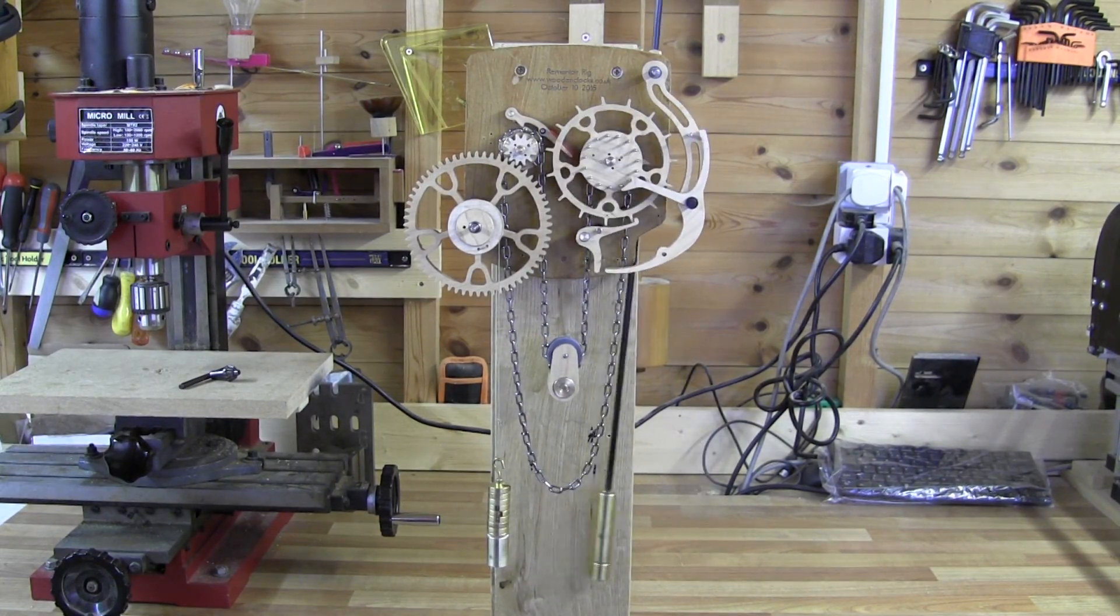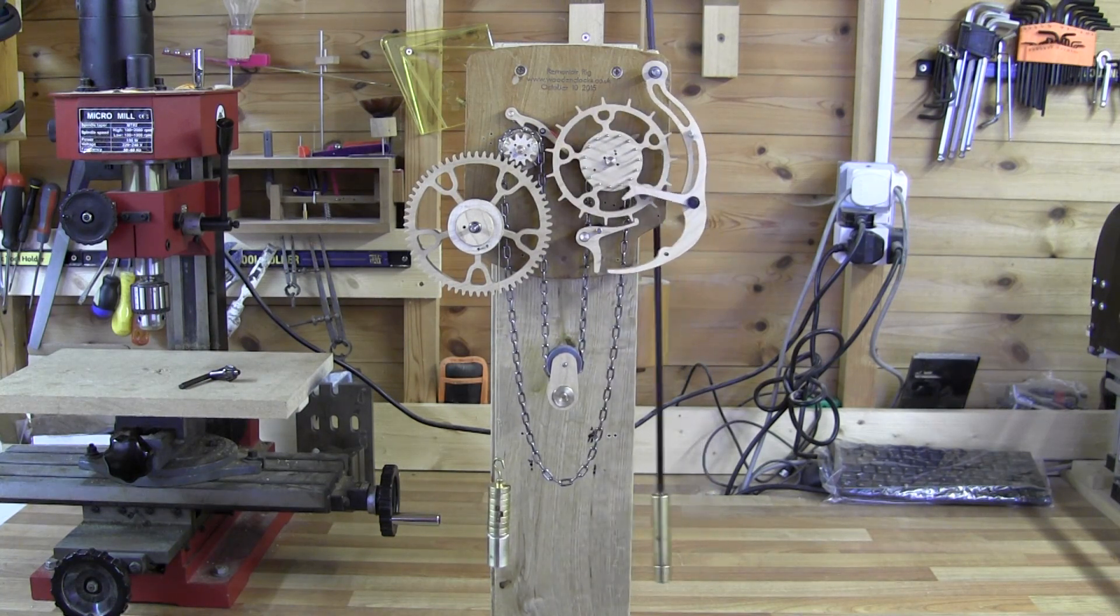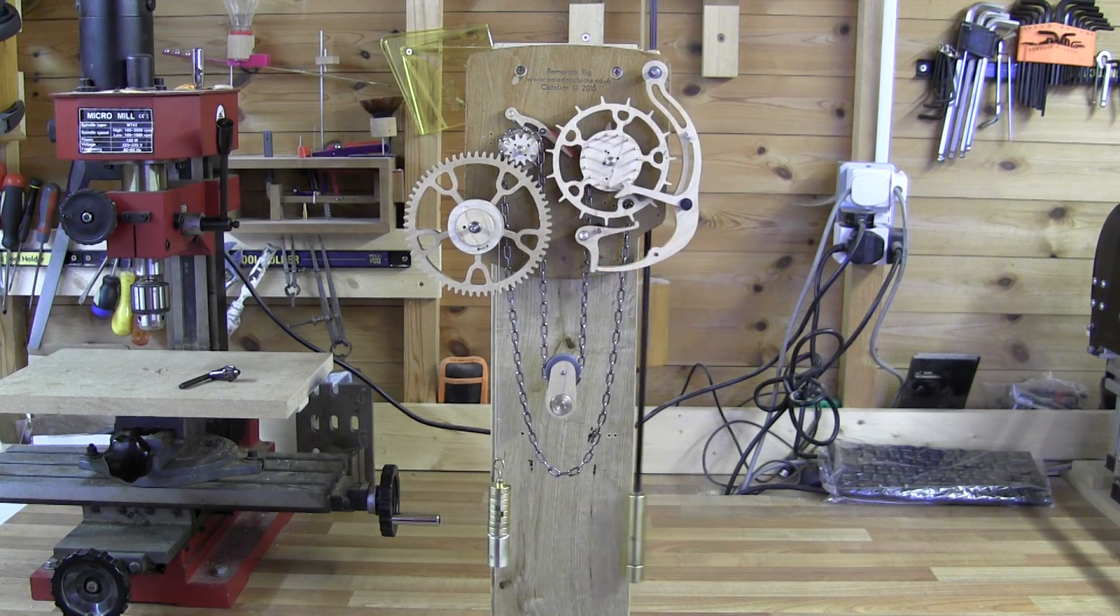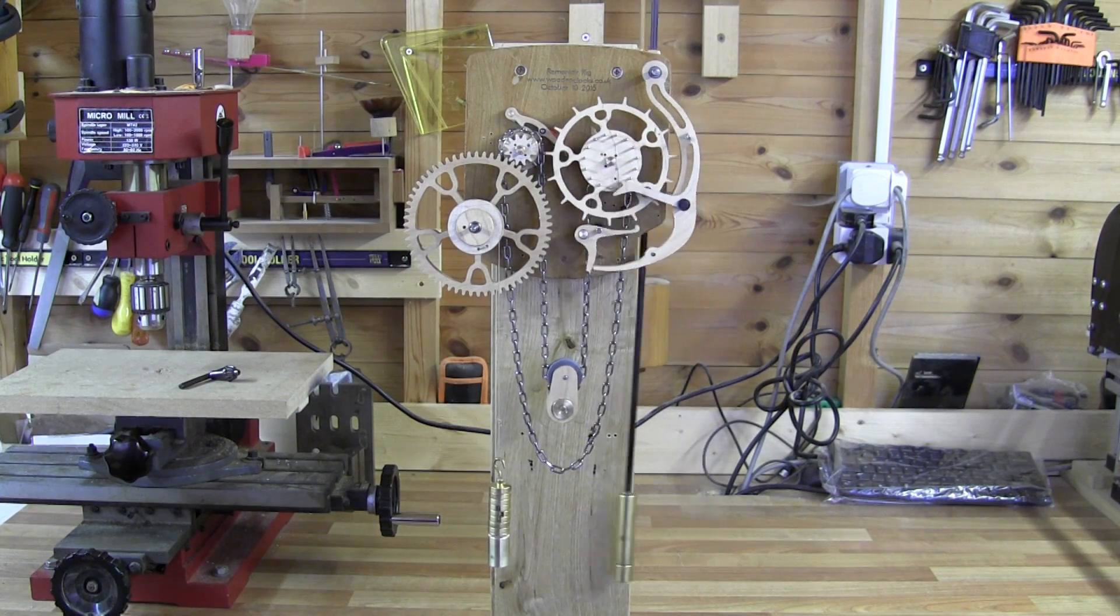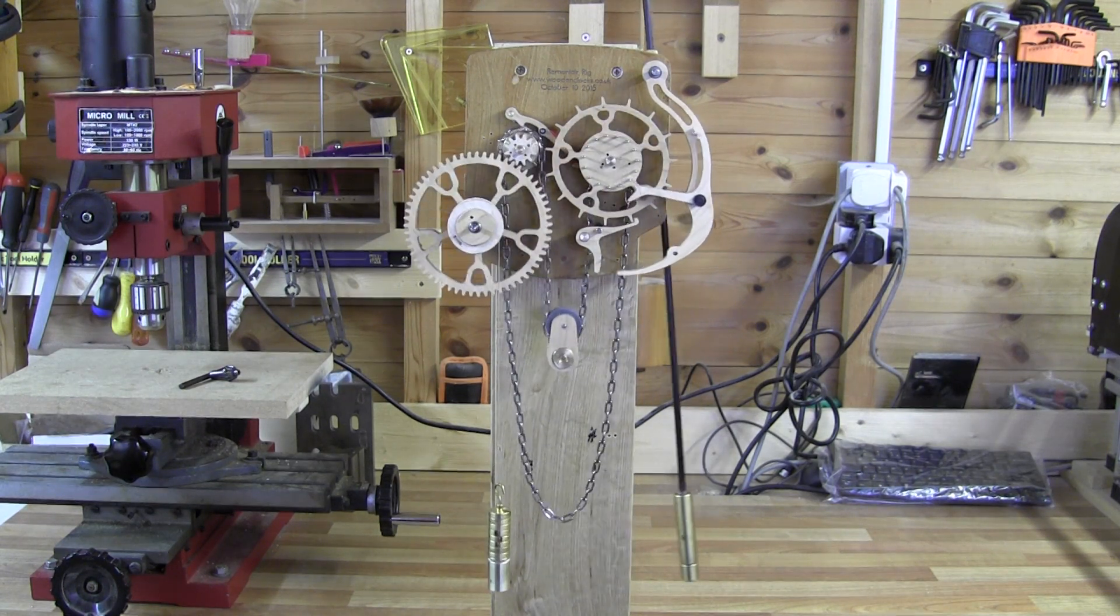The final rig uses a traditional grandfather clock chain and sprocket. Perhaps it should have been the first choice because not only did it work well and accurately, it looks the part when used in a wooden clock. So this is the arrangement that will be used in the next clock.